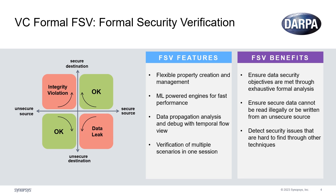The purpose of formal security verification is to prevent integrity issues of unsecured sources accessing secure destinations, and to prevent data leakage from secure sources to unsecure destinations. VC Formal FSV offers flexible property creation and management, fast performance, easy debug flow, and allows multiple scenarios to be analyzed in one session. Through exhaustive formal analysis using VC Formal FSV, if 100% convergence can be achieved on your security objectives, you'll know for sure that your design doesn't have these vulnerabilities.